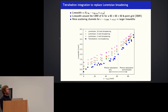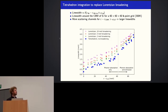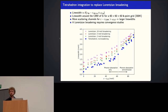In order to compute the linewidth, we have delta functions for energy conservation that we have to integrate. Usually, these delta functions are replaced by either Gaussian or Lorentzian peaks with a small broadening parameter. Depending on the broadening parameter, we get a different linewidth — the larger the broadening parameter, the larger the linewidth. We have to perform a convergence study, decreasing the broadening parameter so that the delta begins to look more like an actual Dirac delta, until the linewidth no longer changes.